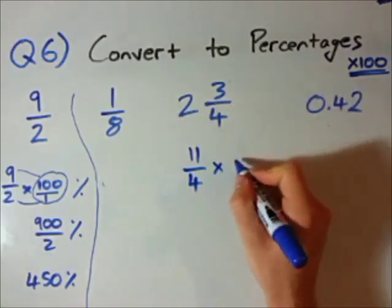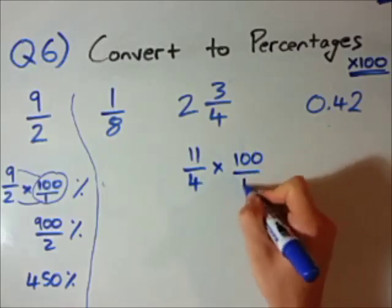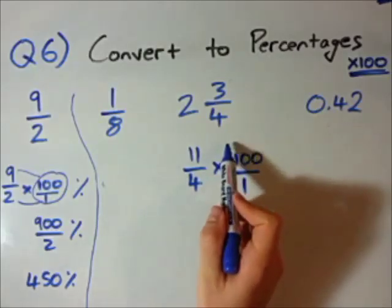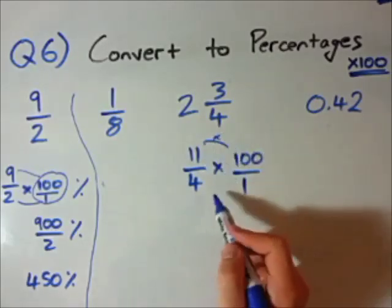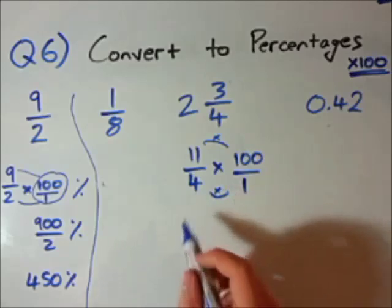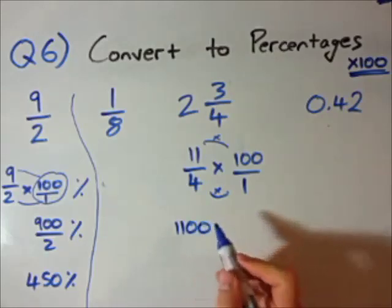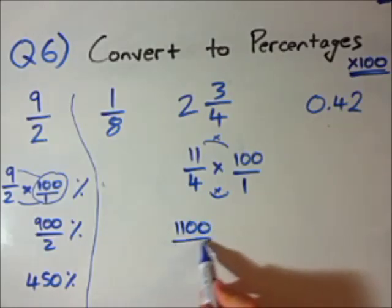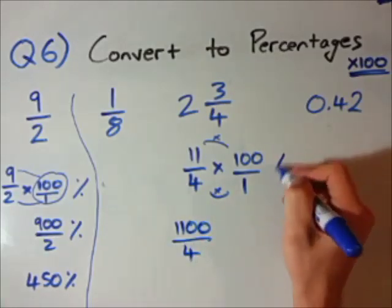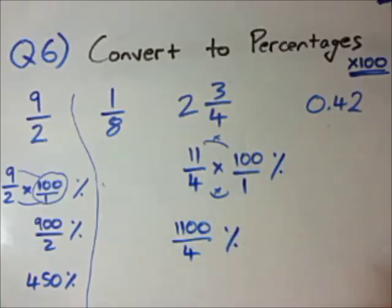I want to convert to percentage. So I'm going to times by 100. Times top, times bottom. Law of multiplication of fractions. So it's going to be 11, 1100, sorry, over 4. And we're now in percentage form. So we have 1100 over 4%. That's right. Probably not as simple as we'd like to go. So let's go and simplify this now.